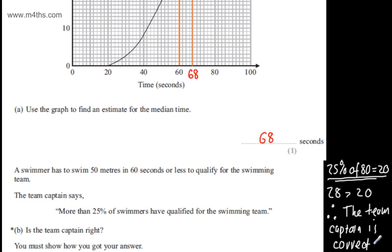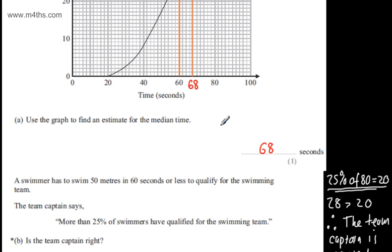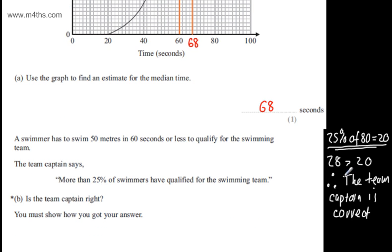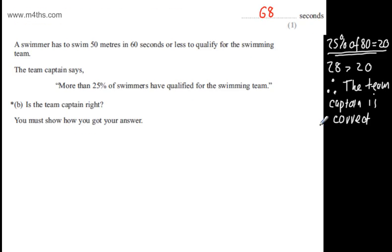You'll get one mark for some form of showing what you're doing on the graph. You'll get one mark for showing that the statement 25% of 80 is 20 and then making a conclusion. That should be the mark distribution on that question.